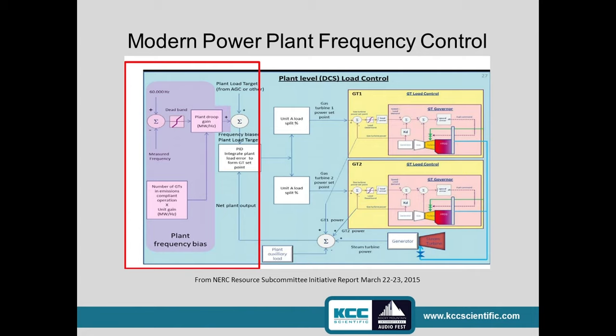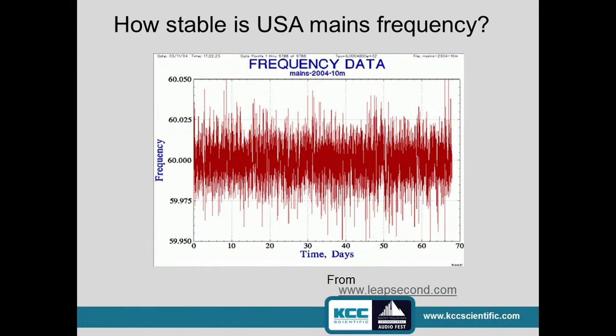There is a programmed dead band in the way frequency is controlled, which means it's going to go way down before anything happens to bring it back up, and vice versa — and that's on purpose. You can't jerk a 50-ton flywheel around back and forth; you've got to do it slowly and gently, which means you're going to get some movement of that frequency up and down. It's unavoidable. Automated systems today do a much better job than a master clock could have.